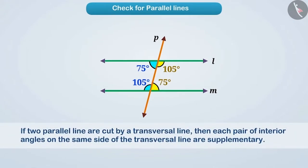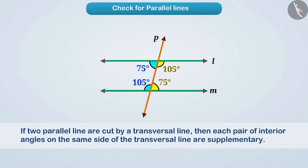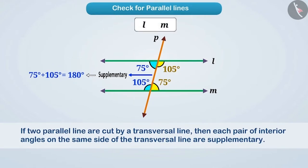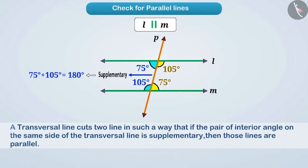We know that if two parallel lines are cut by a transversal, then each pair of interior angles on the same side of the transversal are supplementary. If we observe here, the pair of interior angles formed on the same side of the transversal are supplementary — that is, the sum of these is 180 degrees. So we can say that line L and line M are parallel lines. If a transversal cuts two lines such that the pair of interior angles on the same side of the transversal is supplementary, then the lines are parallel.